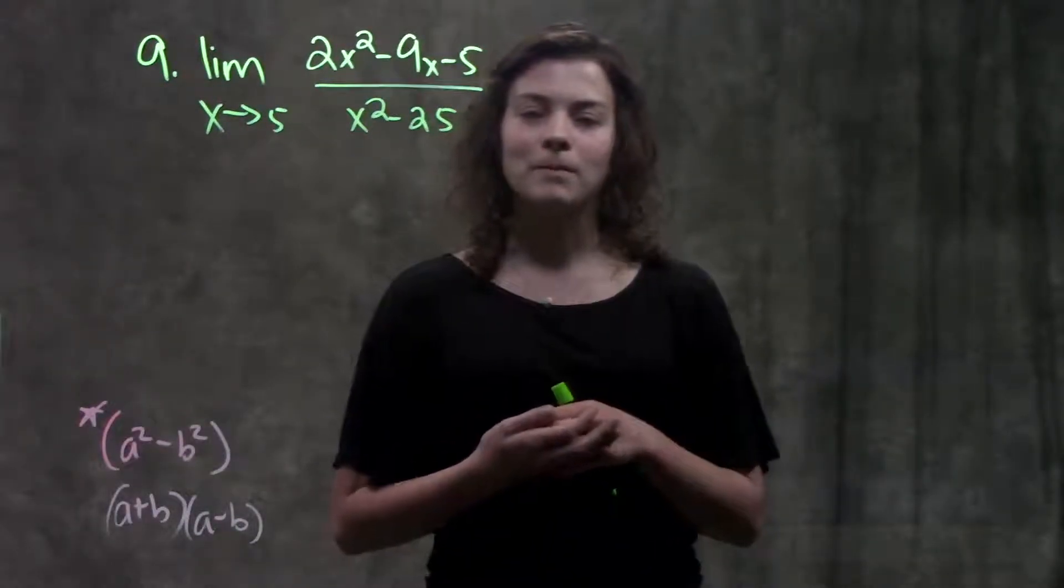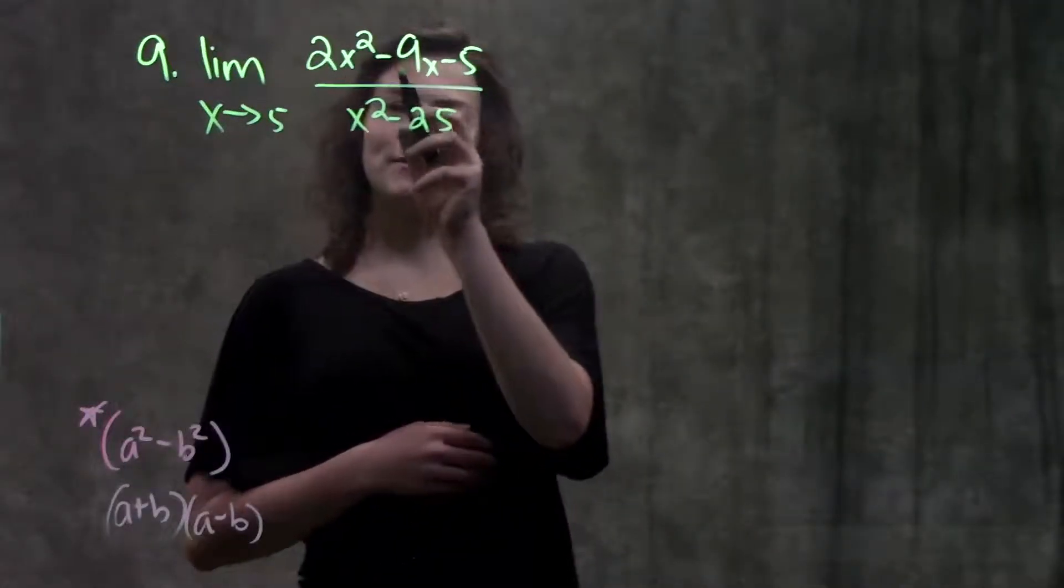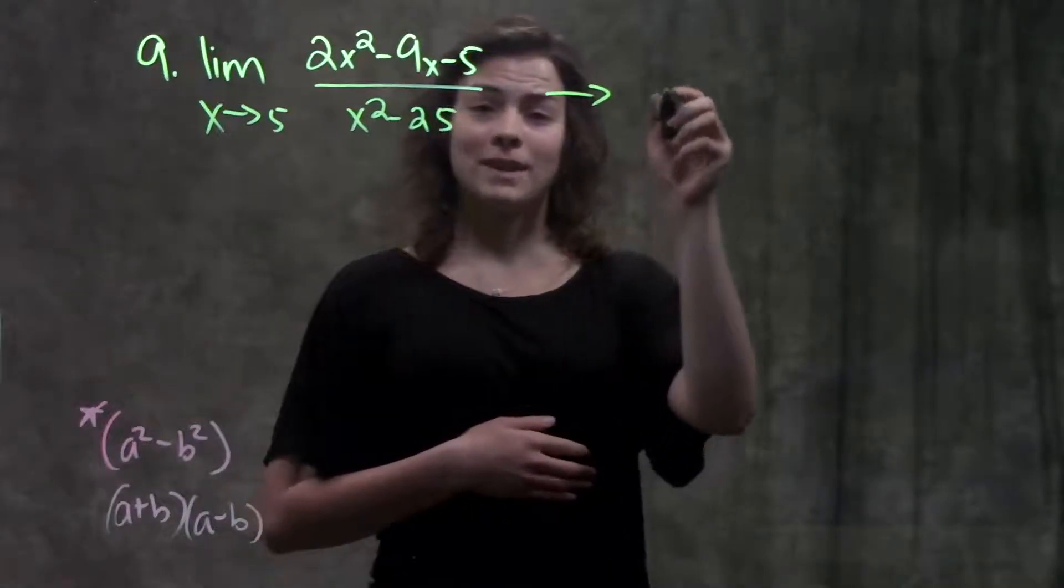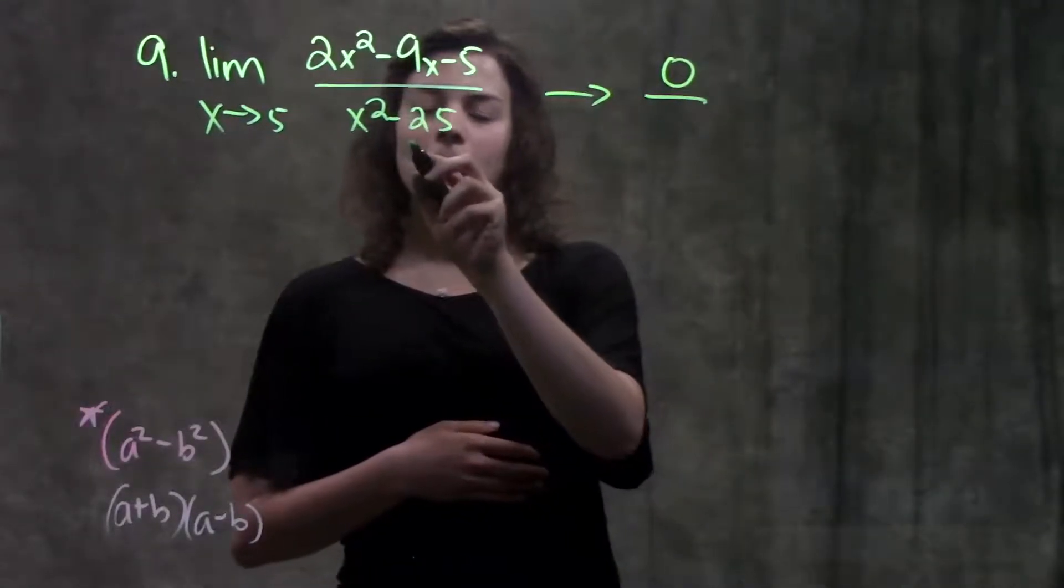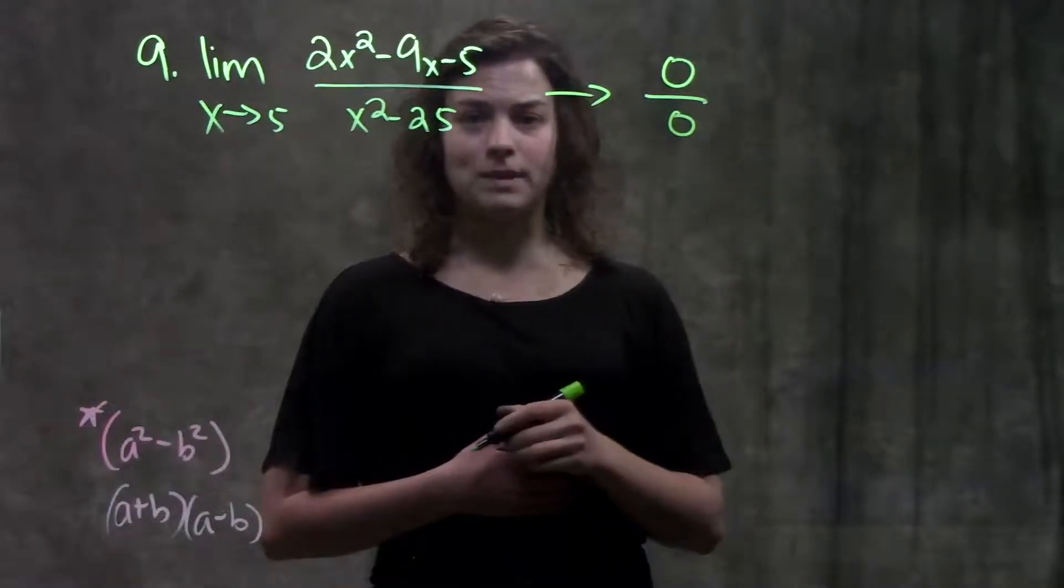First step whenever we see these types of problems is to try a direct substitution. So for direct substitution, I plug in a 5 wherever I see an x. On the top, when I plug in 5, I'm going to end up getting 0. And on the bottom, when I plug in 5, I get 25 minus 25, also gives me 0.